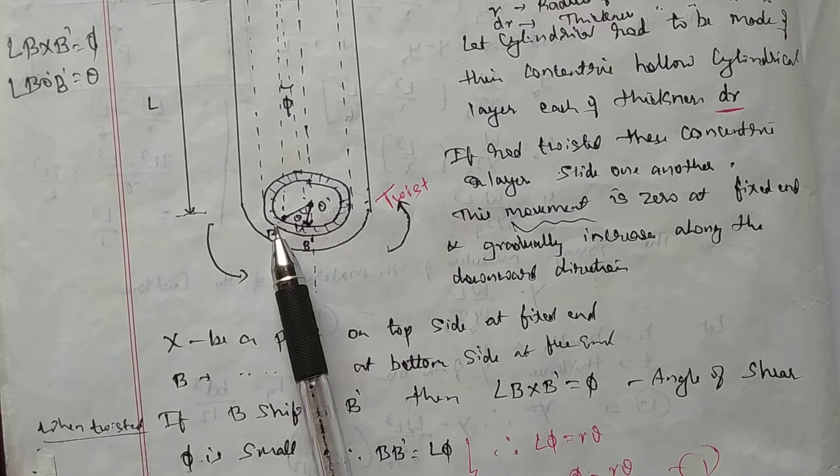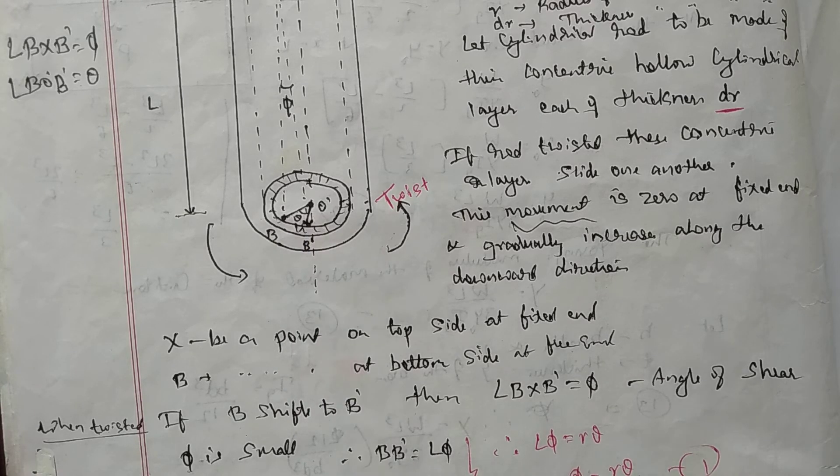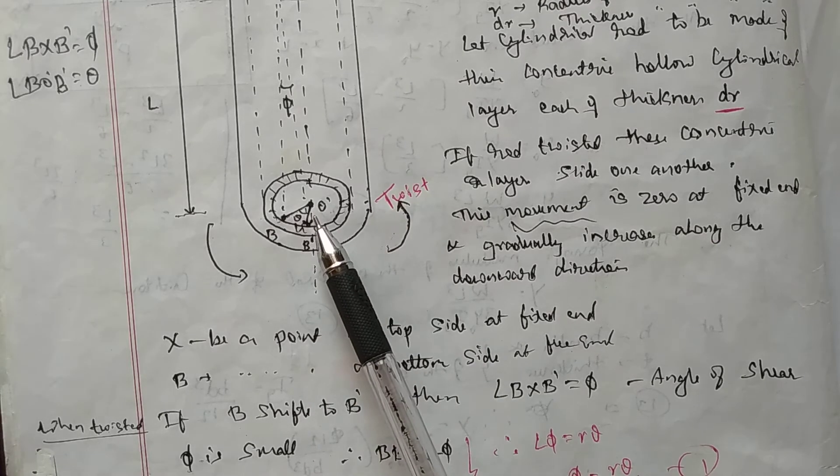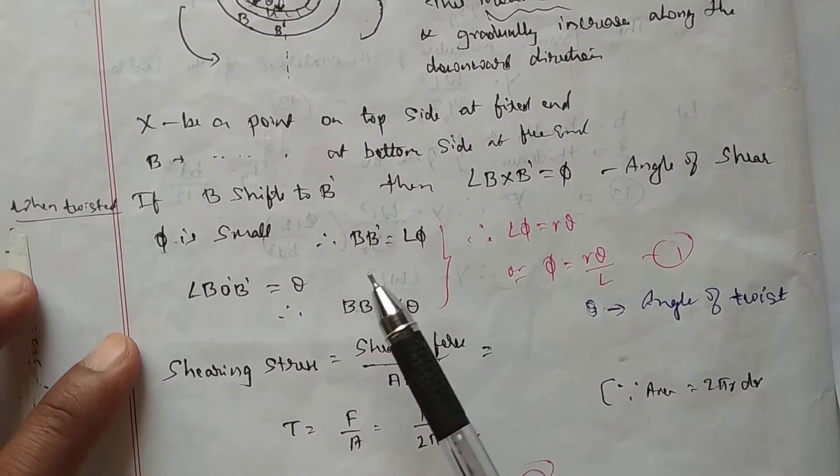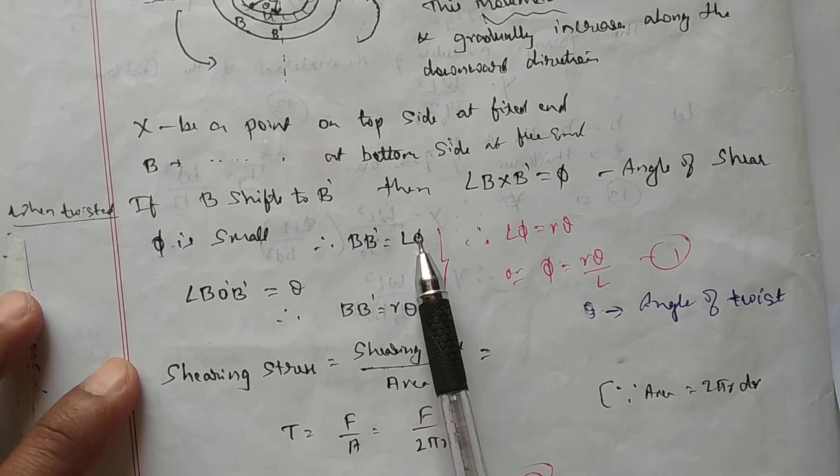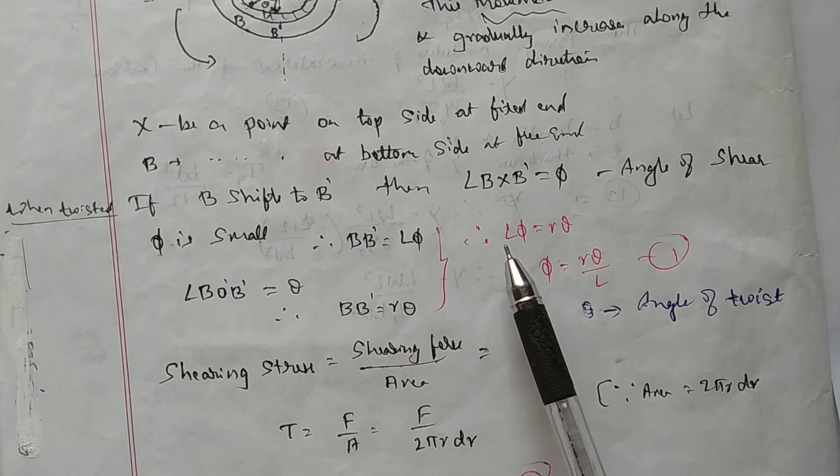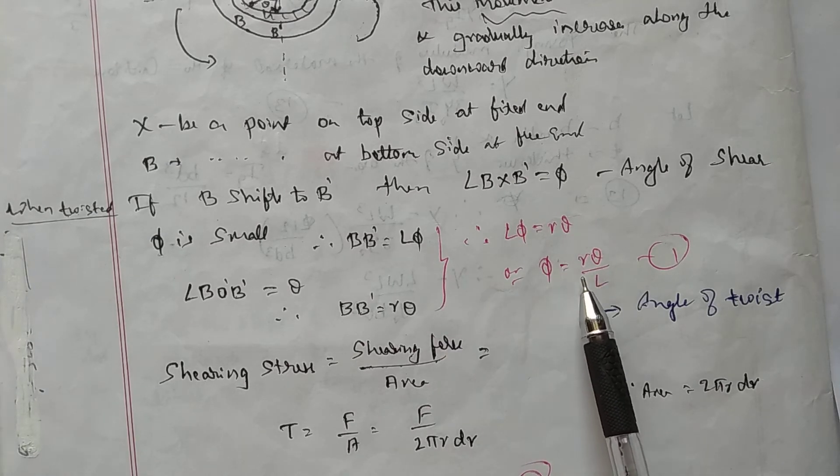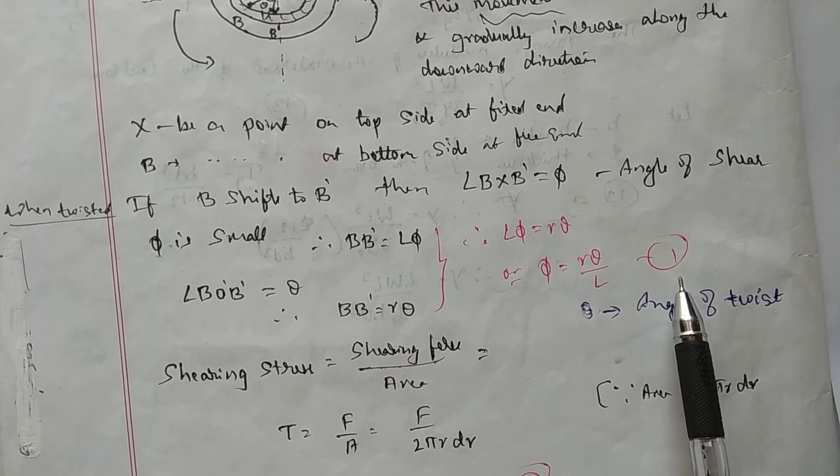Therefore, BB dash, once again, is equal to R into theta, where R is the radius of the concentric layer. Now equating these two, that is BB dash equals L phi and BB dash equals R theta. That is L phi equals R theta. We can write phi equals R theta by L. Call this as equation number 1. So this angle theta is called as angle of twist.